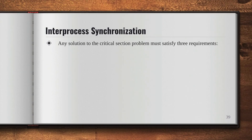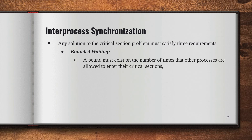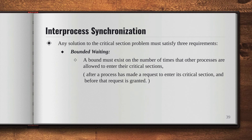The third requirement is bounded waiting. A bound must exist on the number of times that the other processes are allowed to enter their critical section. After a process has made a request to enter the critical section and before that request is granted, there needs to exist some kind of a bound on the number of times. That's your third requirement.